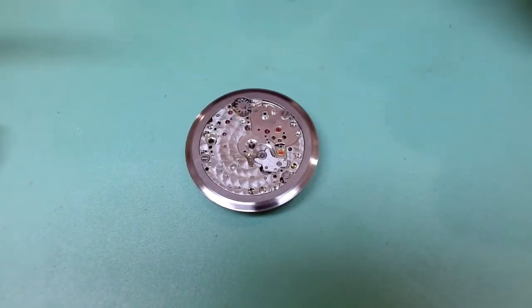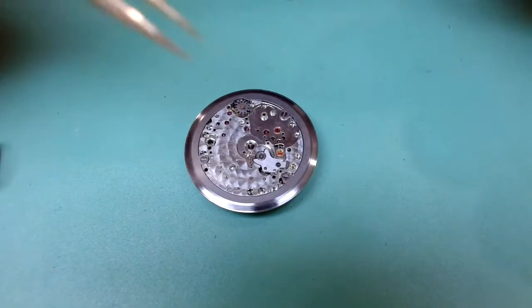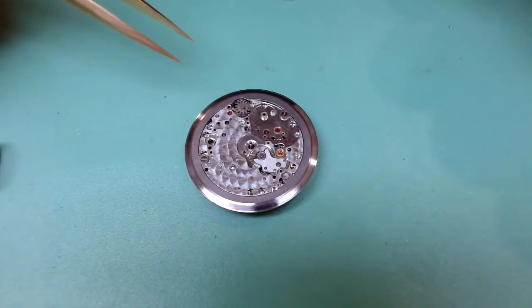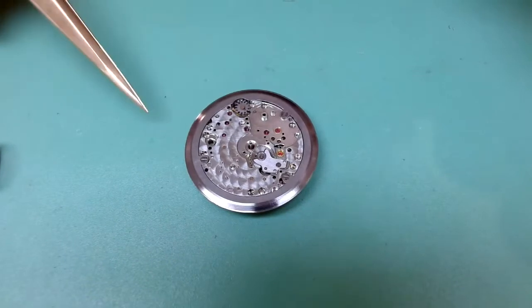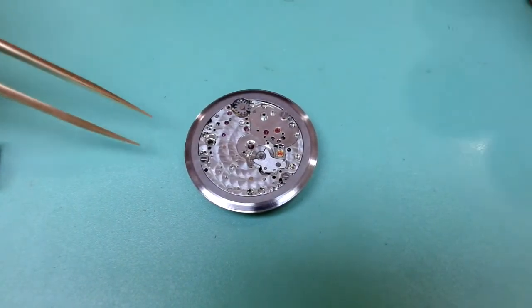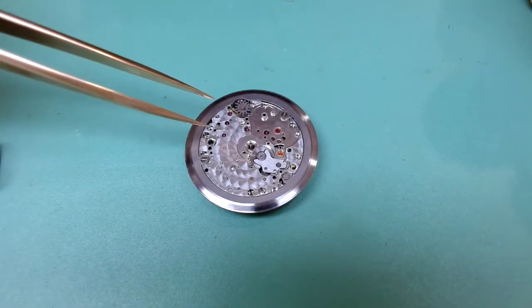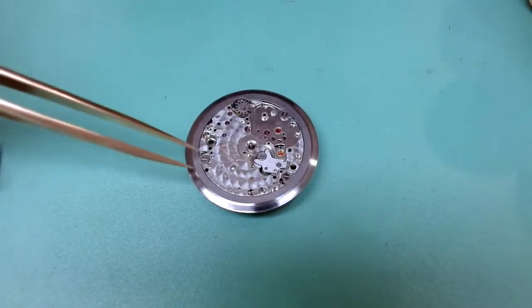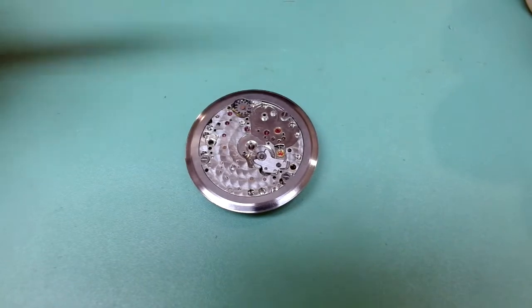The first thing we need to do is remove our peripheral winding rotor. Now normally I wouldn't advise holding a watch or movement with your hands to undo something, but because of the way this oscillating weight is connected, it's going to be very important that we take care not to damage it, which is why we're not going to put it in a movement holder.